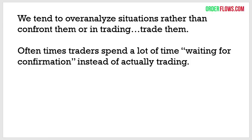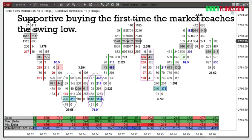We tend to overanalyze situations rather than confront them — or as in trading, trade them. You've got to take trades when they present themselves. Sports and trading have a lot of analogies. I remember a baseball player who got called up from the minor leagues. He'd watch pitches come in with his bat on his shoulder, and his coach said, 'Hey, you're going to swing the bat or what? You're not going to stay in the majors unless you swing the bat.' It's like that with trading. Think of it like having a store — your chances of success are higher if you have multiple products to sell rather than just one.